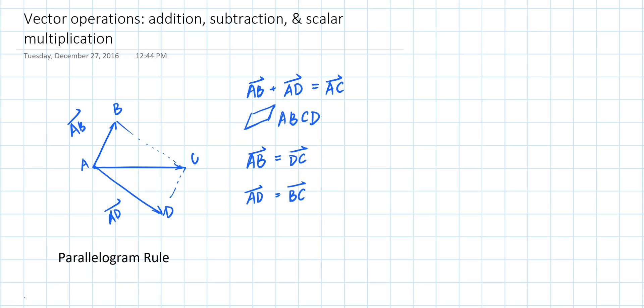So if you replace vector AD with its equivalent vector BC in this equation, then this equation becomes vector AB plus vector BC is equal to vector AC. This equation describes an alternative rule of adding two geometric vectors. That's called the triangle rule.